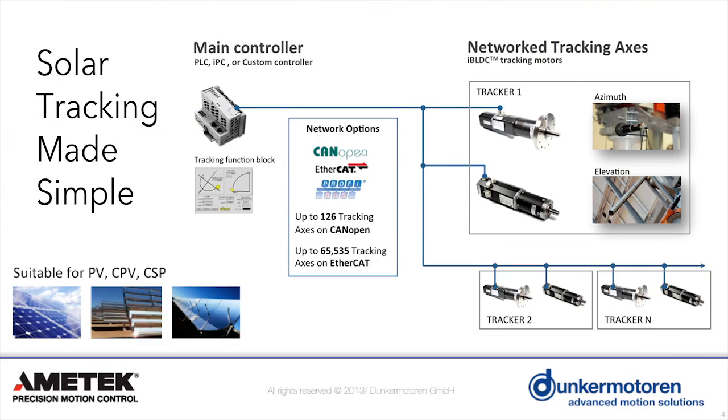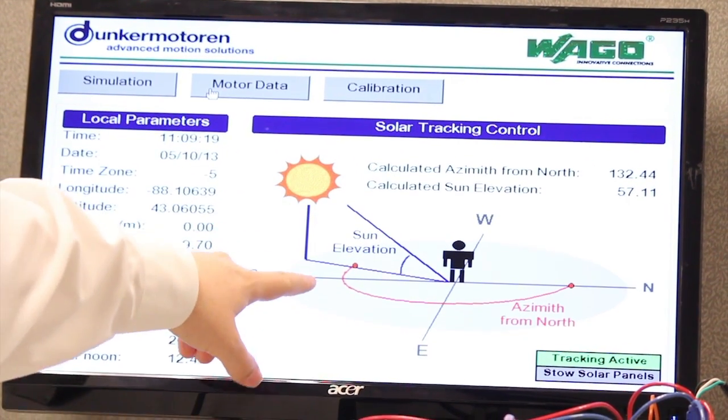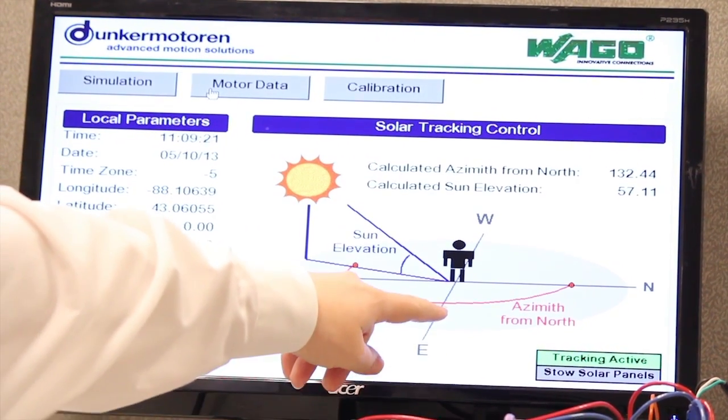In this demonstration, only two motors are connected. However, we can have up to 126 motors connected to one master. The solar tracking function block is calculating the angle of the sun in the azimuth and elevation based on the local time and GPS position.